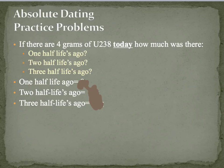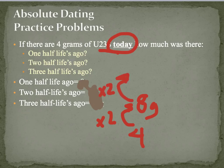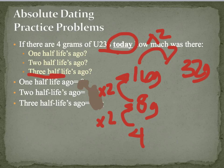This next one works in the opposite direction. If there are 4 grams of uranium today, how much was there one half-life ago? To go back up the ladder, you multiply by 2. So one half-life ago there were 8 grams, two half-lives ago there were 16 grams, and three half-lives ago there were 32 grams. Instead of dividing by 2 each time, you multiply by 2.